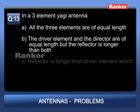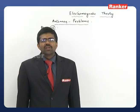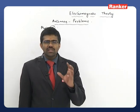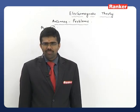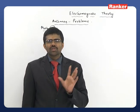Problem 13: In a three-element Yagi-Uda antenna, which statement about element lengths is correct? Option A: all three equal; Option B: driven element and director equal, reflector longer; Option C: reflector longer than driven element, which is longer than director; Option D: reflector longer than driven, which is shorter than director.